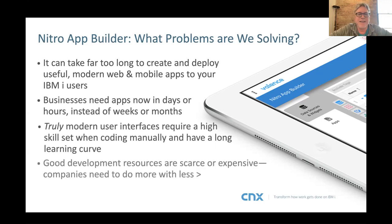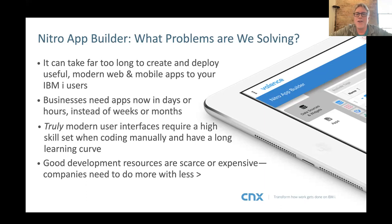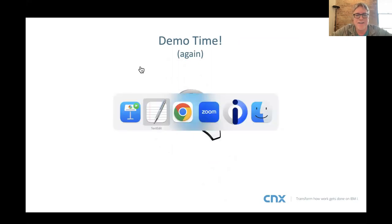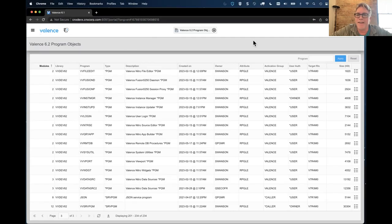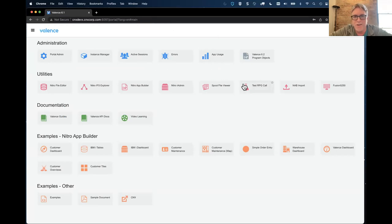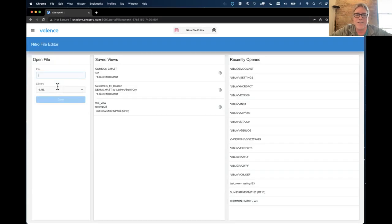What are we solving with Nitro App Builder? It can take way too long to deploy useful modern web and mobile apps for IBM i users - there's a lot of coding required generally, and businesses don't have time to wait while you tinker with HTML code. The learning curve can be really steep, and it's hard to get the resources necessary. If you've got an understanding of your database and basic programming abilities, you can whip out applications for your users within minutes from when you've installed Valence.